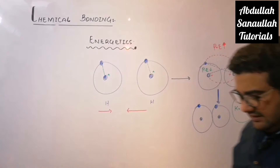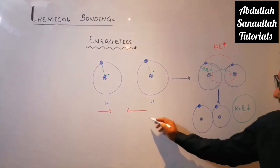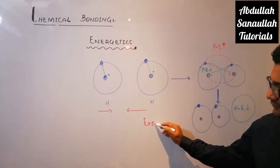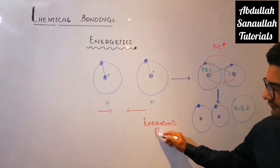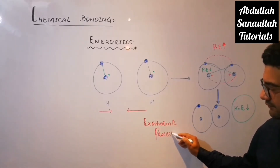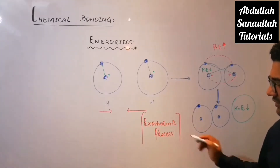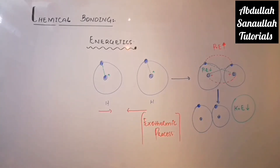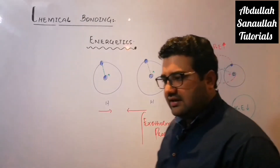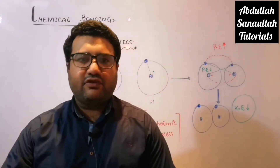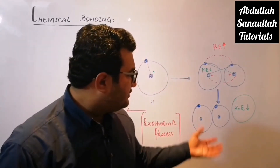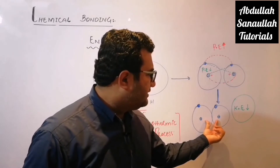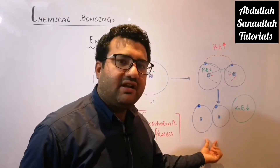That is why we always say that bond formation is an exothermic process. Bond formation is an exothermic process. Whenever excess energy is released from a system, that system gets stable. So when excess energy is released here, these two hydrogen atoms will also get stable.